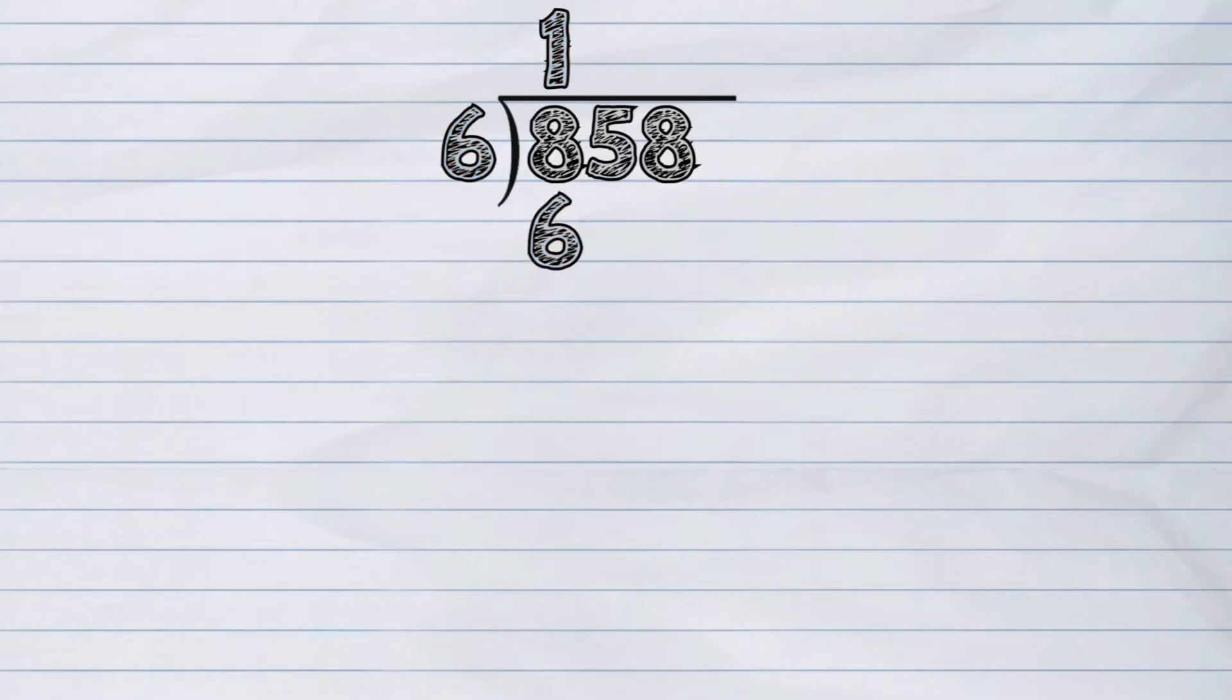The next step is to subtract. In this case, it will be 8 minus 6. The answer is 2. The fourth step here is to bring down the next number from the dividend, which is five tens. We write the five next to the number two, making the number twenty-five.